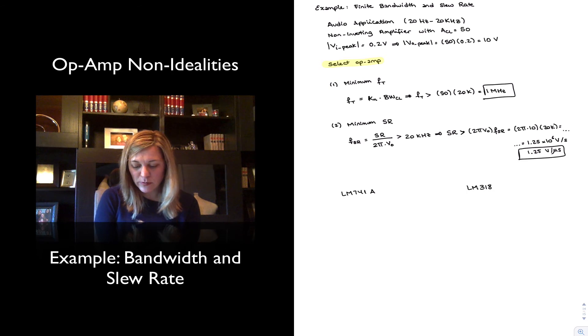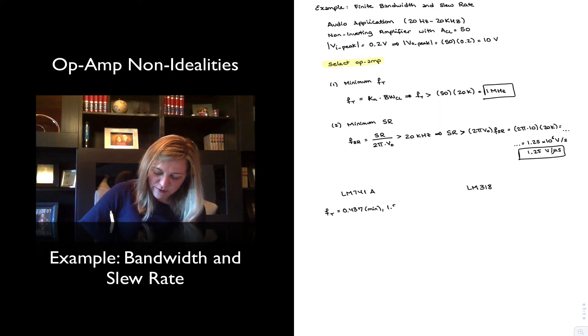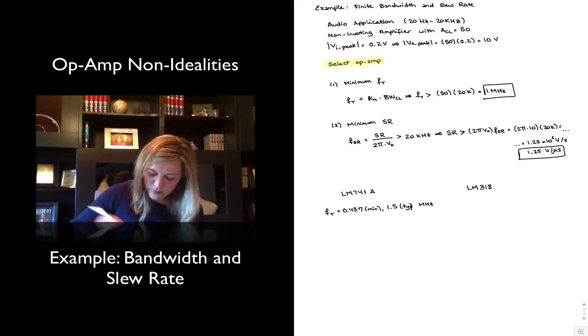If I look at the data sheet for the LM741A, I find that my transition frequency, it gives me two values. It has 0.437 as the minimum, or 1.5 as the typical, and that's in megahertz. And my slew rate, it gives me 0.3 volts per microsecond as the minimum, and I'm going to put the unit at the end so I don't have to repeat it twice. So 0.3 as the minimum, 0.5 as the typical, and that's in volt per microsecond.